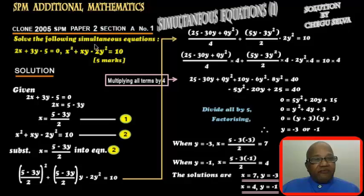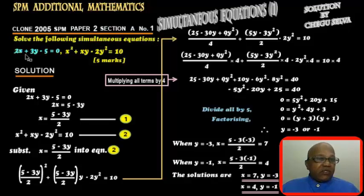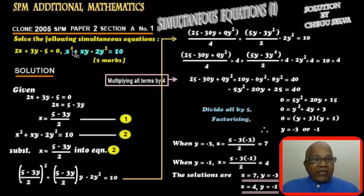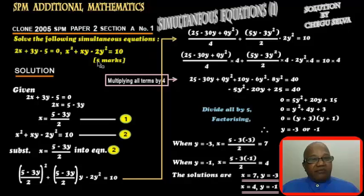Solve the following simultaneous equations: 2x plus 3y minus 5 equals to 0, and x squared plus xy minus 2y squared equals to 10. This question is worth five marks.